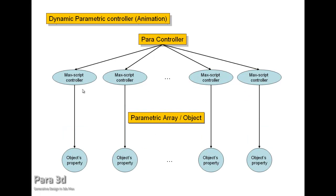But when you're dealing with animations, you're basically doing dynamic parametric controllers. When you press the animate button, Para3D will assign each max script controller to the object property directly. So in this case you may not need to have Para3D in your machine to see the result, unless there is a piece of code that is embedded in the program and these max script controllers need to read that code from there.